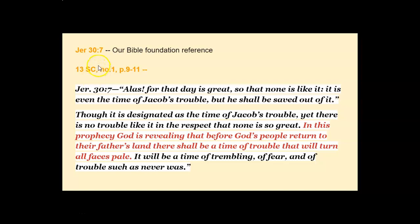From the 13 Symbolic Code: 'Alas, for that day is great, so that none is like it; it is even the time of Jacob's trouble, but he shall be saved out of it. Though it is designated as the time of Jacob's trouble, yet there is no trouble like it. In this prophecy, God is revealing that before God's people return to their father's land, there should be a time of trouble that will turn all faces pale — a time of trembling, of fear, and of trouble such as never was.' Do you see this?